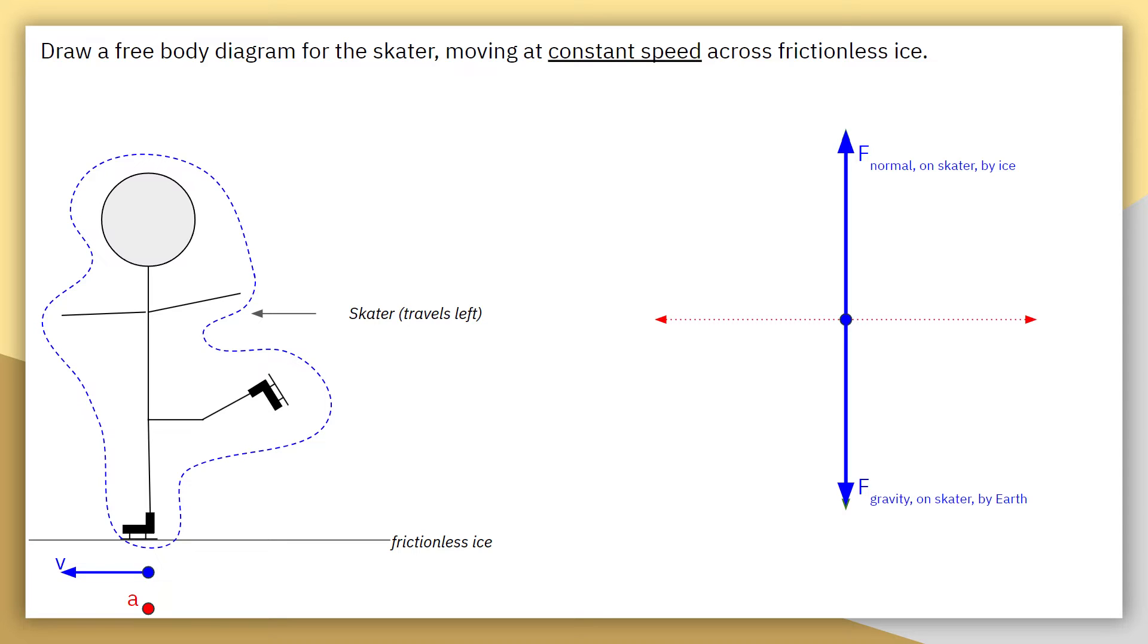So this person, while they are traveling left, the only object they are actually directly interacting with is that frictionless ice. We have already explained how the ice is interacting with the skater. It is pushing up on them. Because we're saying this ice is frictionless, it's not going to be pulling back on them. So we're not going to have a force of friction resisting their motion forward.